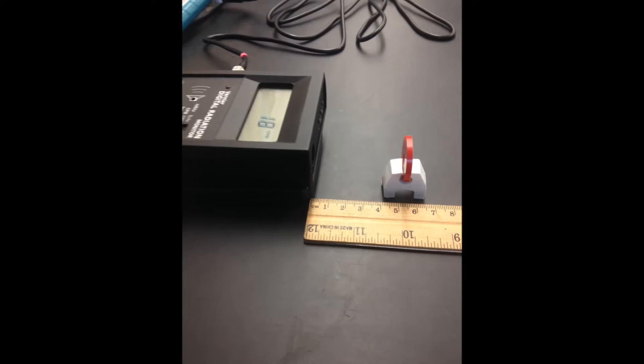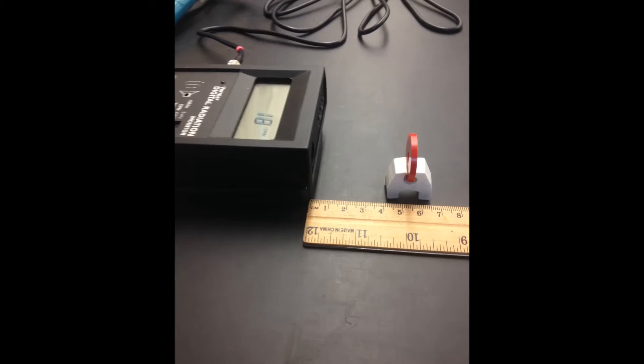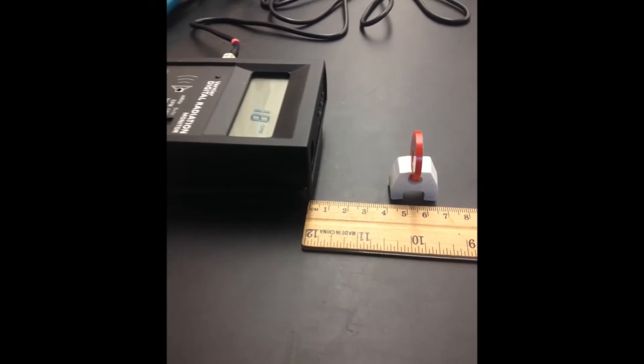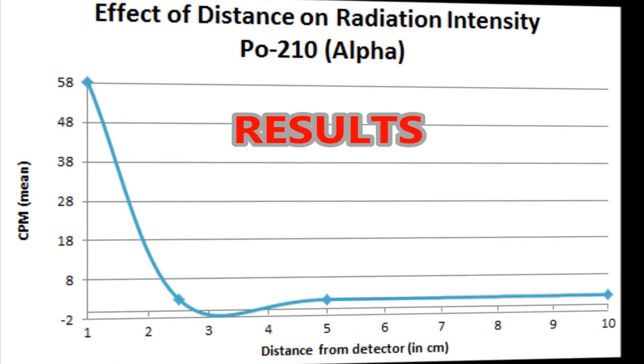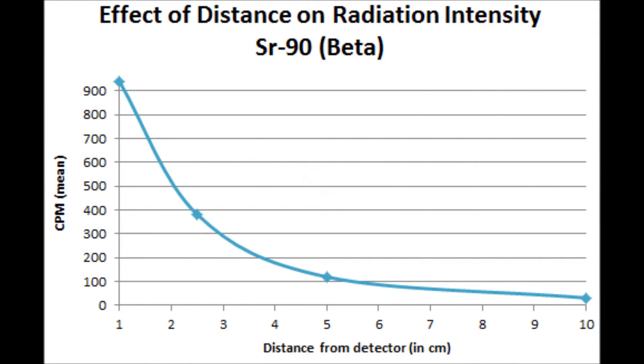The radiation sources were then tested at a distance of 1 centimeter with the shielding materials for the same amount of time. All of this information was recorded on the data table. We came across different results for each type of radiation. We concluded that the further the radiation source is from the detector, the smaller the mean CPM is.